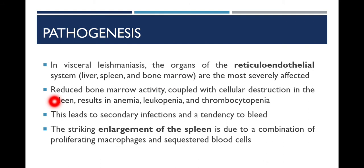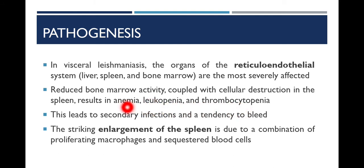Infection of the reticuloendothelial system results in reduced bone marrow activity, coupled with cellular destruction in the spleen, because the spleen destroys infected cells. This results in anemia, leukopenia, and thrombocytopenia. Anemia is a lower level of hemoglobin, leukopenia is decreased WBCs, and thrombocytopenia is decreased platelets below normal levels. This leads to secondary infection and tendency to bleed, as the immune system is compromised and the patient is more prone to bacterial and viral infections.